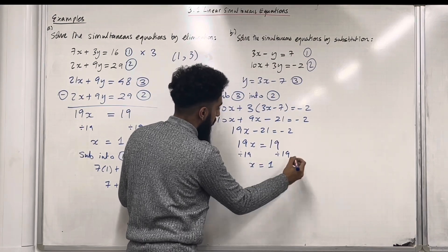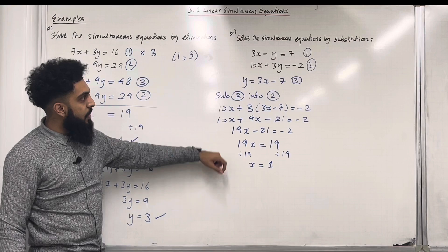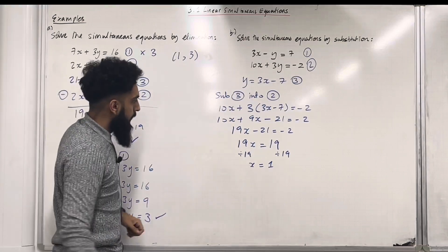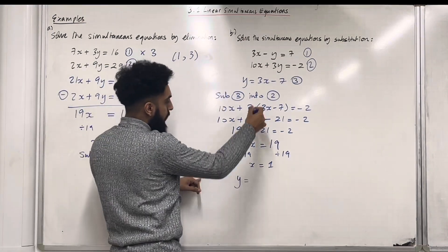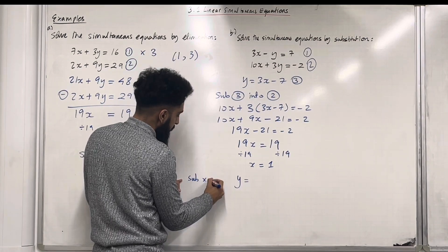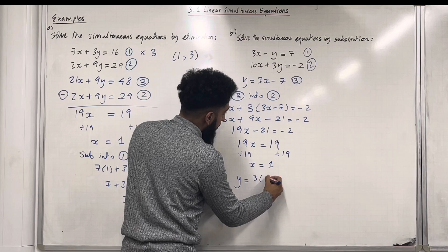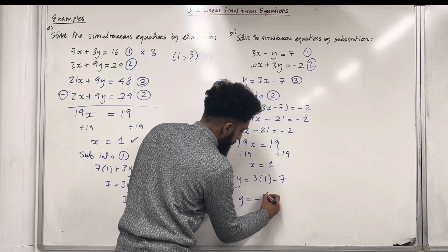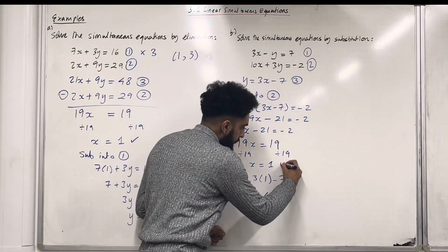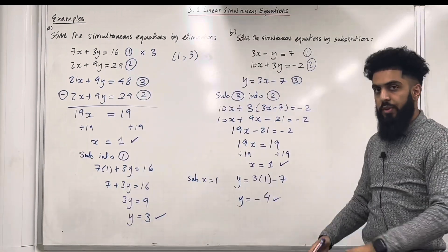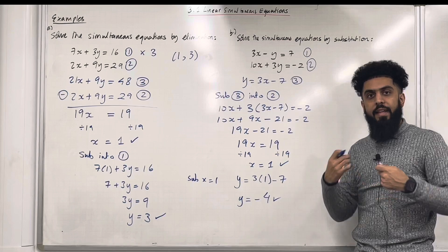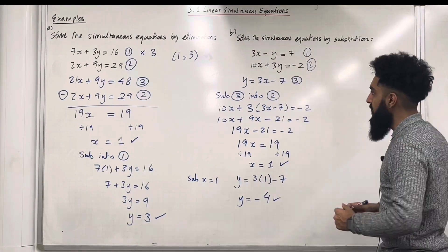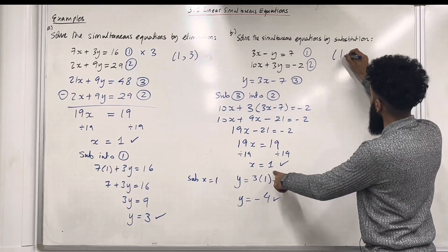So x is equal to 1. Now I can substitute x equal 1 into equation 1, 2, or 3. The easiest option would be equation 3, because y is already the subject. So y is equal to 3 multiplied by 1, take away 7. y is equal to minus 4. So we have x equal 1 and y equal minus 4. Again, these solutions represent the point of intersection between these two straight lines. So in coordinate form, the point of intersection will be (1, −4).